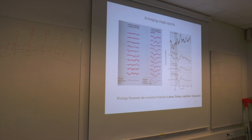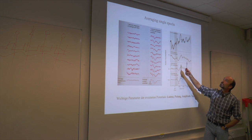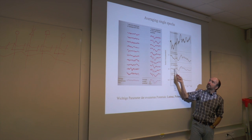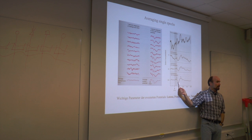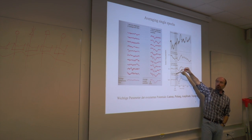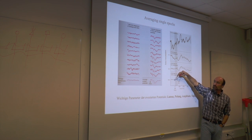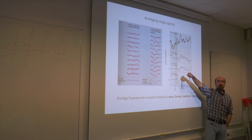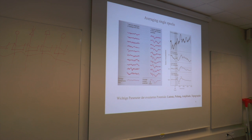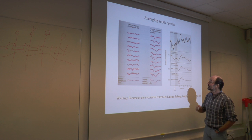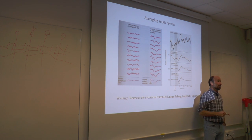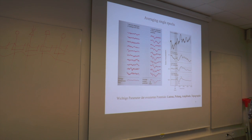Here's an example with a click sound: with one single trial you see nothing systematic. With about 50 or 100 averages, systematic positive and negative deflections emerge — this is the post-stimulus evoked potential. The nomenclature is not very intuitive: the first positive component is called P1, the first negative is N1, and so on.